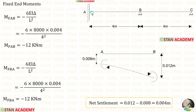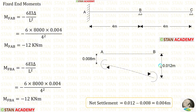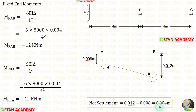Now let us find the fixed end moments. First, let us find them in span AB. In span AB there is no load, so there are no fixed end moments due to loads. Support A sinks by 0.008 meters and support B sinks by 0.012 meters. The settlement at B is more than at A, so the net settlement occurs at support B: 0.012 minus 0.008 gives a net settlement of 0.004 meters.